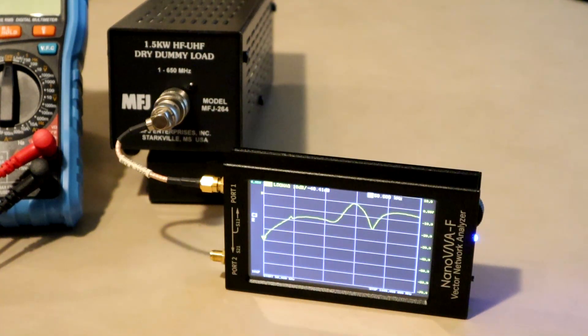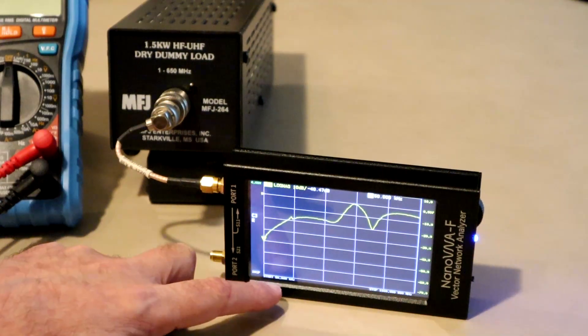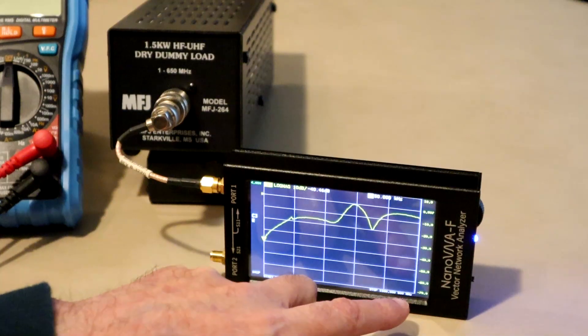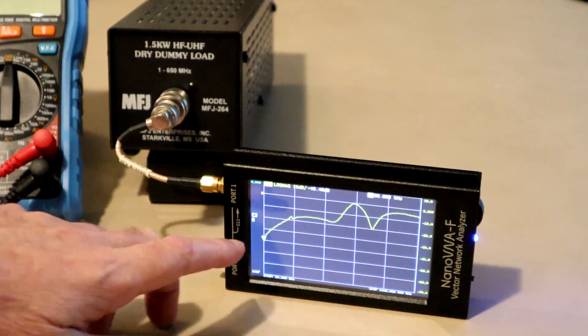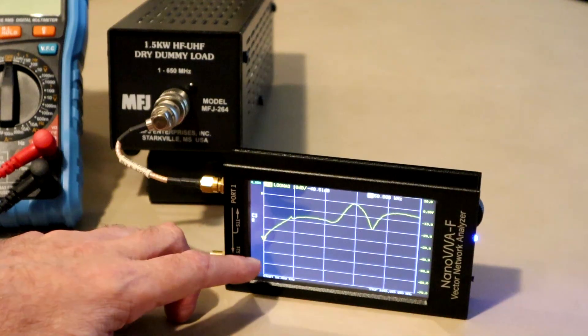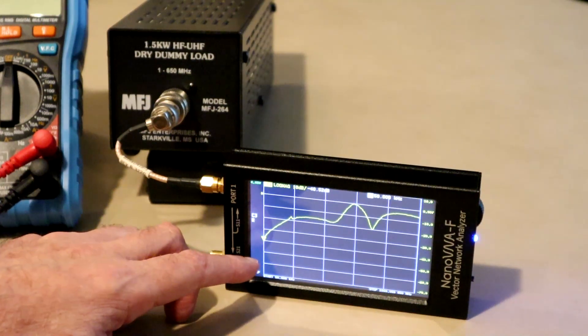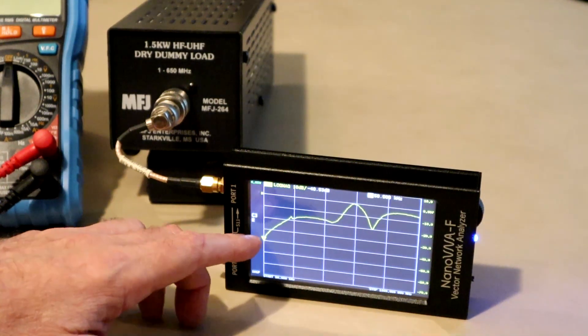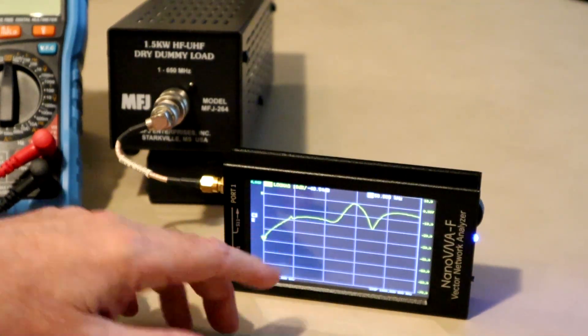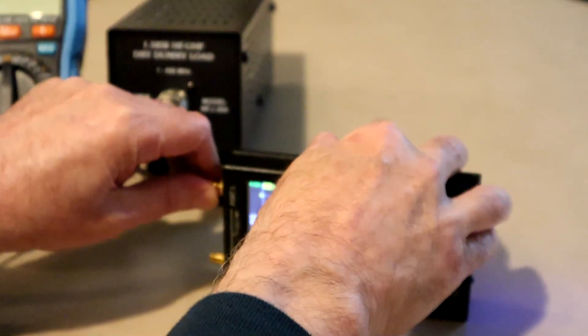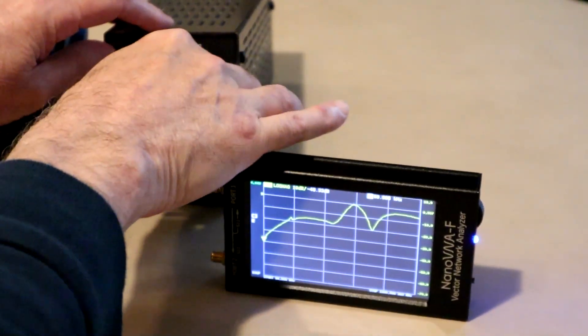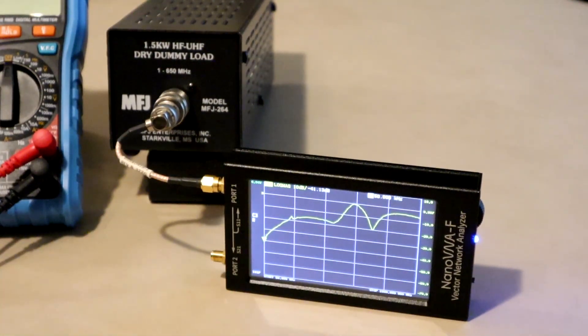So now we're using the nano VNA to look at the performance of the load from 50 kilohertz. It's going up to 1 gigahertz, and over here on the left hand side I've put the marker on the lowest frequency, 50 kilohertz, more or less DC, and it's reading out about minus 41. Depends on how tight these connectors are, so you have to make sure everything's good and tight to get a good reading. Now it's reading minus 41.2 dB. So it's pretty close to the minus 42 that we calculated.